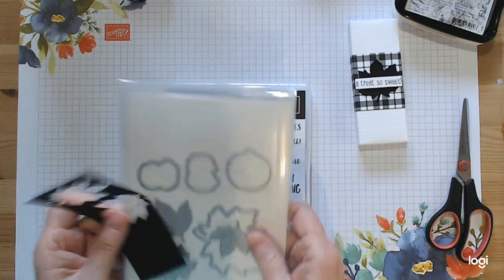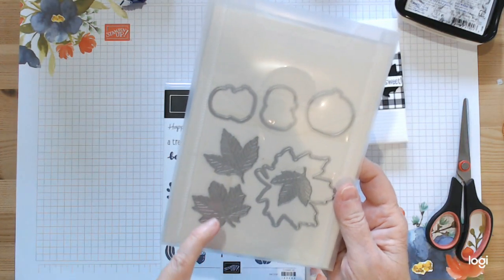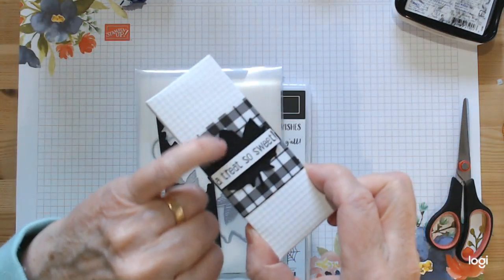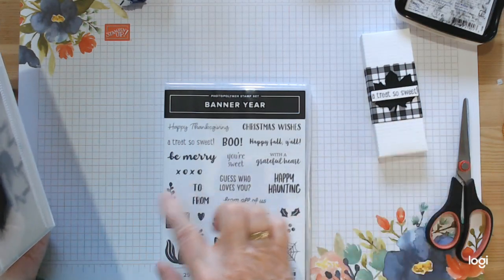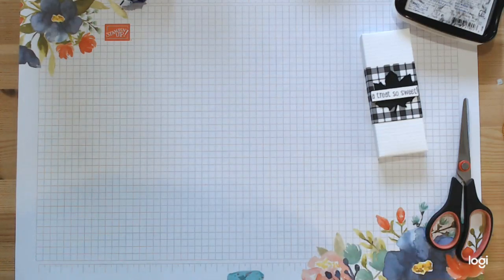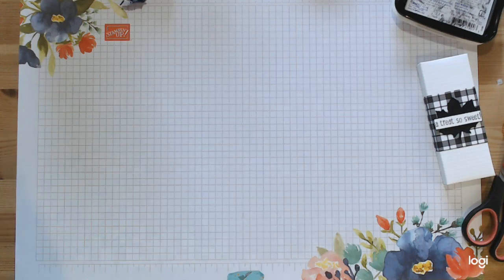So we'll start off by showing you what I'm using. I've cut out of the plain black card the lovely gathered leaves die. It comes out all embossed and everything. For the 'a treat so sweet' sentiment, I've taken it from the banner year stamp set.